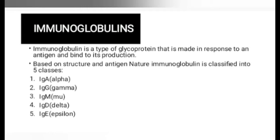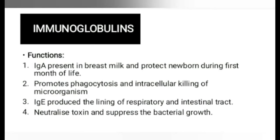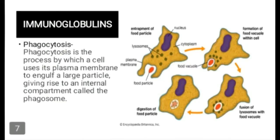The functions of immunoglobulins: immunoglobulin A is present in breast milk and protects the newborn during the first month of life. It promotes phagocytosis and intracellular killing of microorganisms. Phagocytosis is the process by which a cell uses its plasma membrane to engulf a large particle, giving rise to an internal compartment called the phagosome.